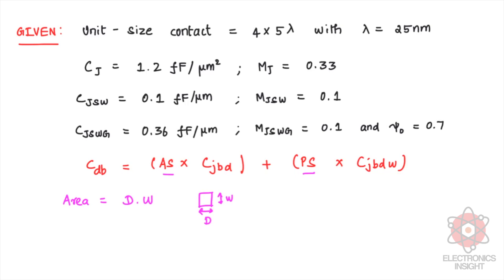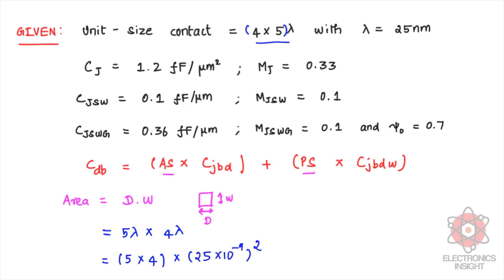For the area calculation, the unit-size contact is 4×5 lambda, so D = 5 lambda and W = 4 lambda, with lambda equal to 25 nanometers. Therefore the area is 5 × 4 × (25 × 10⁻⁹)² = 0.0125 micrometer squared. This is the area used for the CDB calculation.